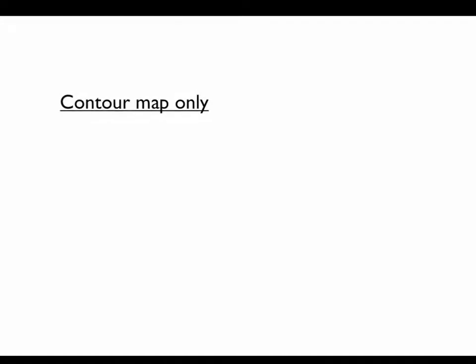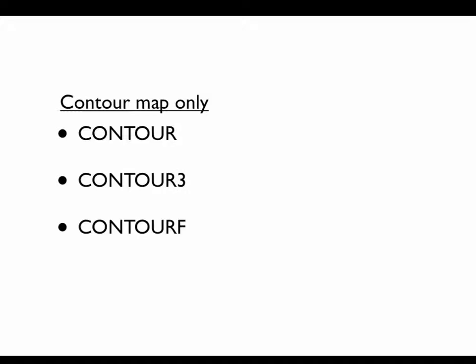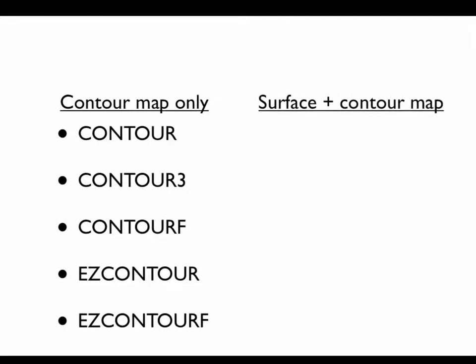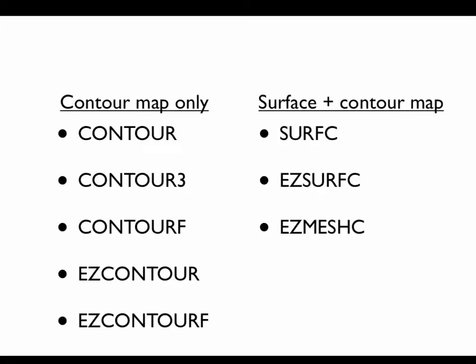So that gives us at least eight different ways to produce a contour map. We have commands that produce the contour map only: Contour, Contour3, ContourF, EZContour, and EZContourF. Remember that Contour, Contour3, and ContourF involve creating a mesh grid and defining the function, while EZContour and EZContourF require no mesh grid or variable declaration but give you less control. We also have commands for producing both the surface and the contour map: SurfC, EZSurfC, and EZMeshC. SurfC requires variable declarations and gives you more control, whereas EZSurfC and EZMeshC are easier to use but give you less control over the output.